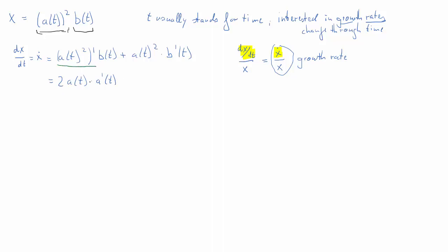Remember a(t) and b(t) are just some generic functions — in practice they could be any particular function. So the full derivative is 2a(t)·a'(t)·b(t) plus a(t)²·b'(t), where the second term comes from the product rule. Now what we want is the growth rate, which is ẋ over x.